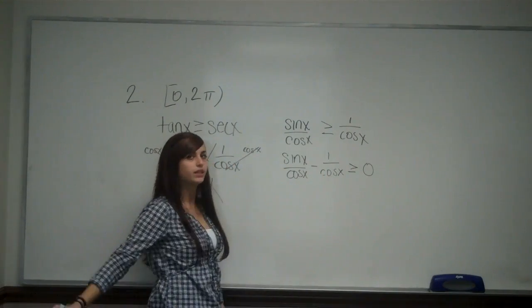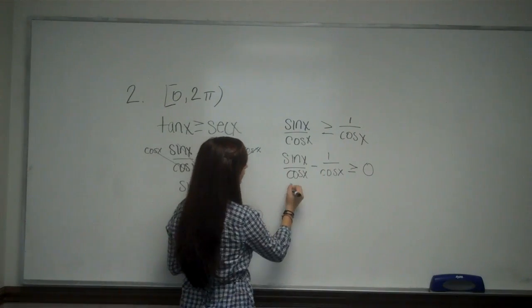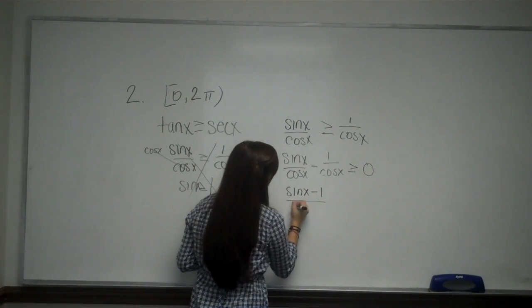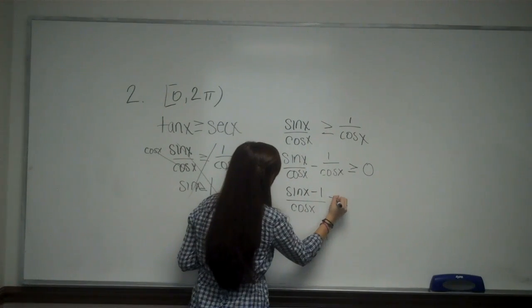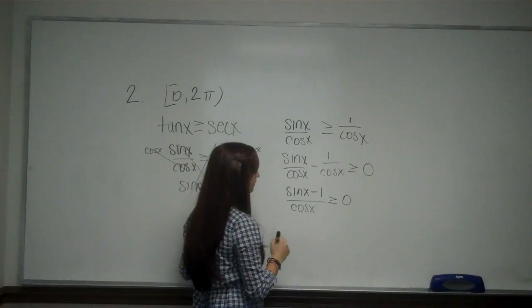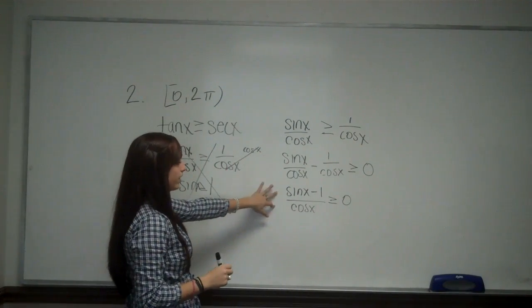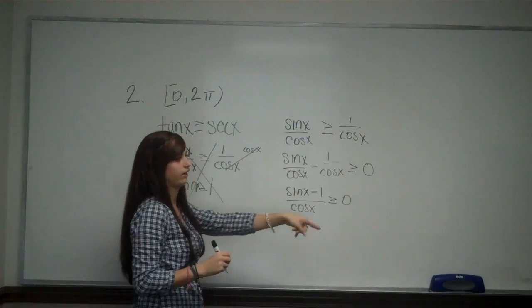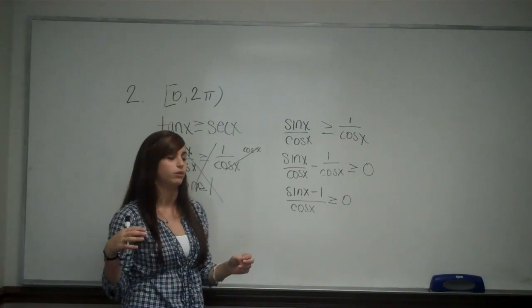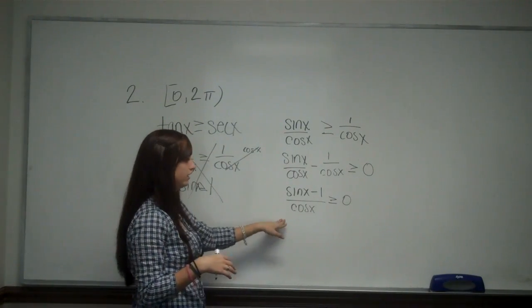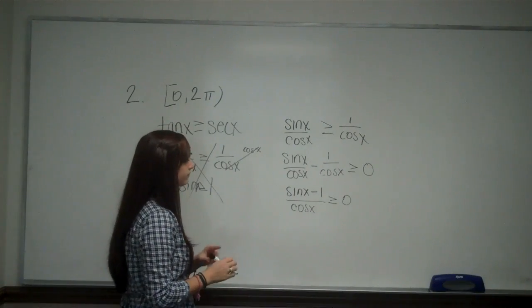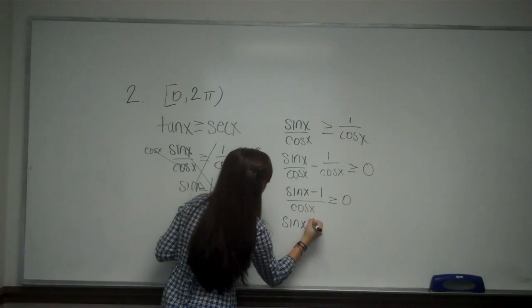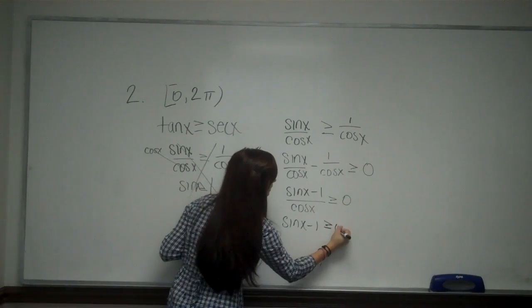Because I have the same denominator I can combine the numerator. So I have sine x minus one over cosine x is greater than or equal to zero. Now I'm going to evaluate each separately, the numerator and the denominator. Remember the denominator when that equals zero it's not in my domain because I can't divide by zero. So that is going to be a critical number that we'll look at. First I'm just going to deal with sine x minus one is greater than or equal to zero.